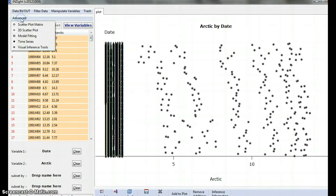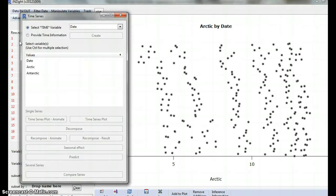But, if I go Advanced, I can click on Time Series, which would be better. So, the time value is Date, and I'm going to look at that one. And I can go Time Series, Plot, Animate.